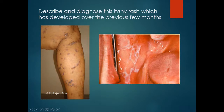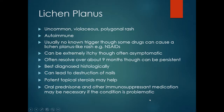Describe and diagnose this itchy rash which has developed over the previous few months. On the lower leg there are multiple violaceous polygonal nodular areas, and on the mucous membrane there is a white lacy spiderweb-like appearance. This is due to lichen planus.